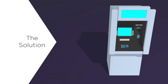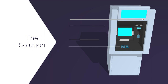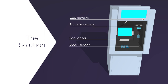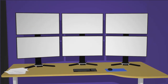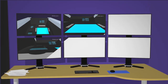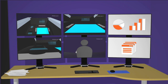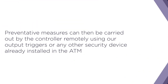The solution can detect the early stages of an attack or fraud on the ATM machine. The triggers built into the solution will send live camera and audio feeds to a control room, giving the controllers the ability to remotely verify an attack or fraud in seconds. Preventative measures can then be carried out by the controller remotely using our output triggers or any other security device already installed in the ATM.